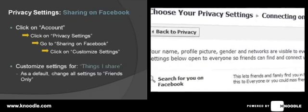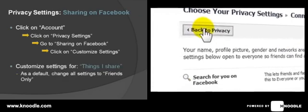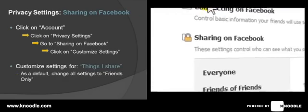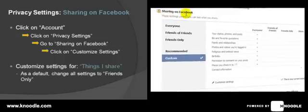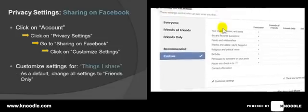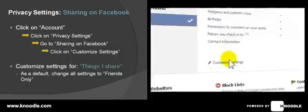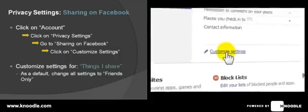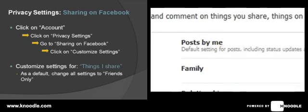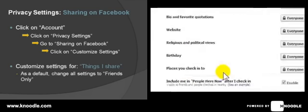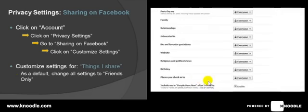Now we'll go back to the privacy section and look at the 'Sharing on Facebook' section. These settings control who can see what you share. Scroll down towards the middle and click on 'Customize Settings.' We're going to recommend that all of these — from 'Posts by Me' right down to 'Places You Check Into' — we're going to change all of those to 'Friends Only.'